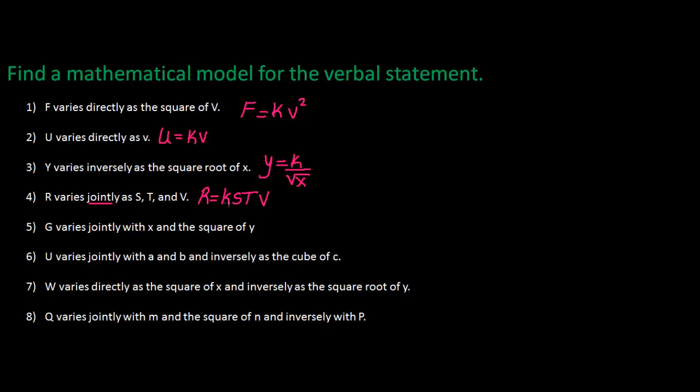Whenever it says jointly, you're going to place all of the variables one next to the other. G varies jointly with X and the square of Y.